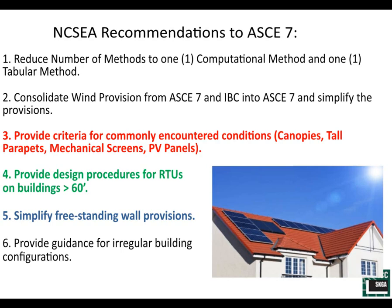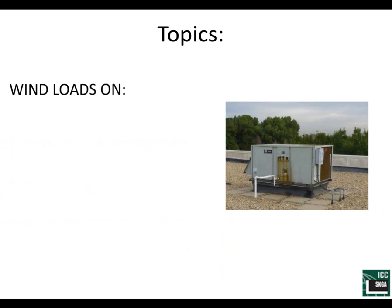The recommendations in black are important but not relevant to what we're discussing today — those include consolidating and reducing the number of wind methods and providing guidance on irregular building configurations. The ones we will talk about today: NCSEA recommended providing explicit criteria in ASCE 7-16 for commonly encountered conditions like canopies, tall parapets, mechanical screens, and PV panels. We also asked for design procedures for rooftop units on taller buildings and simplification of the solid freestanding wall provisions.